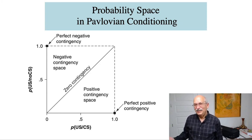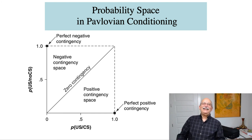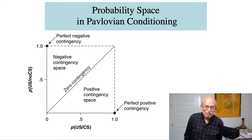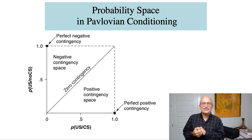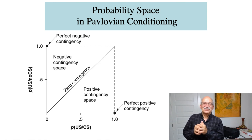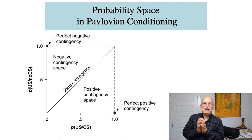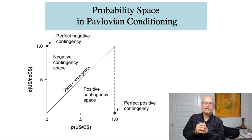Negative contingencies generally produce inhibitory conditioning, and positive contingencies generally produce excitatory conditioning, and both depend on conditional probabilities. These detailed investigations of the relationship between conditioned and unconditioned stimuli unfortunately involve these kinds of complications. I hope you have a chance to read about this, talk about it, and do some exercises in class to get a better understanding of the role of positive and negative contingencies in Pavlovian conditioning. Thanks very much, I'll see you next time.